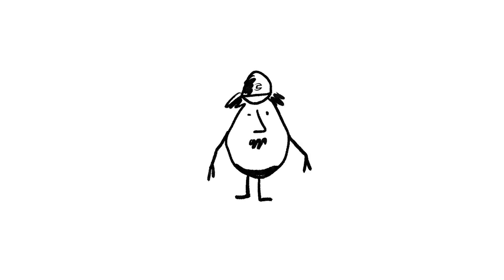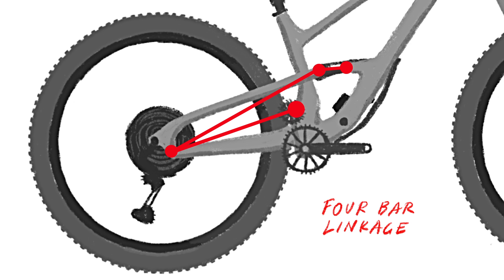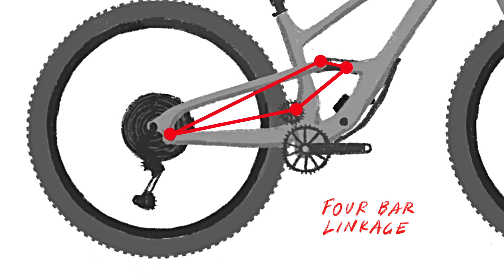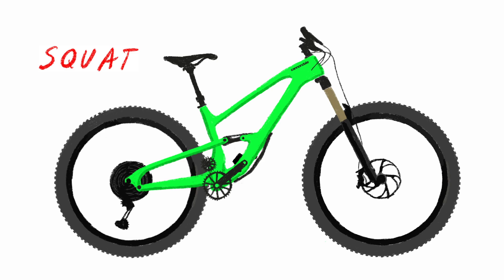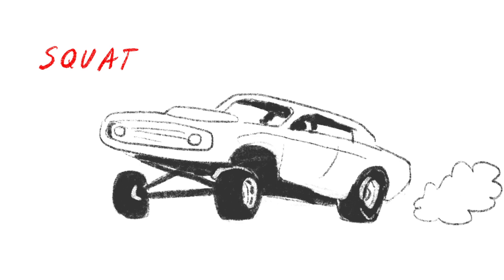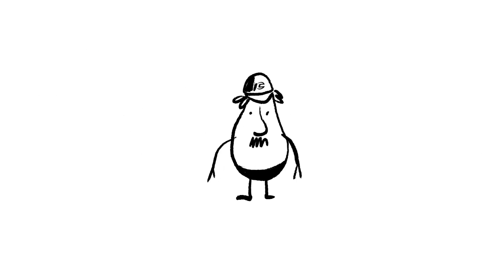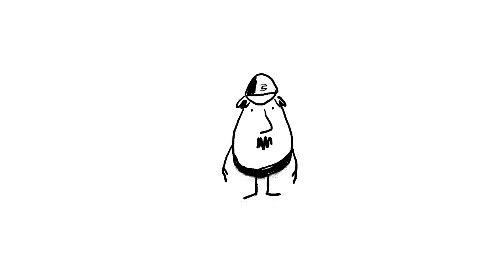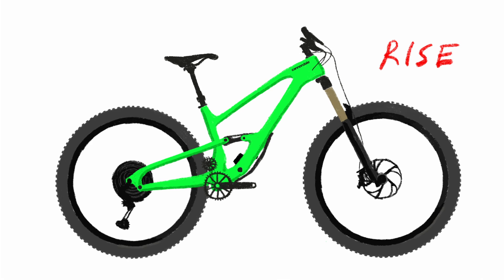Which brings us to the four bar linkage. The four bar or horse link system gives our engineers the ability to control two important variables called rise and squat. Squat is the tendency of the rear suspension to compress under acceleration. Like when you mash the gas in that sweet rental mustang, the tail drops, front comes up, that's squat. Then when you nail the brakes and the front compresses, the rear rises up, well, that's rise.